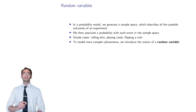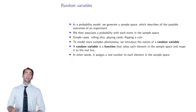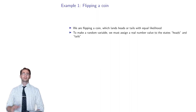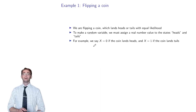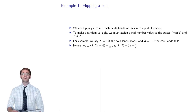To model more complex phenomena, we introduce a random variable — a function that takes each element in the sample space and maps it to the real line. If you're flipping a coin, you assign a number to each outcome: x equals zero for heads, one for tails. The probability that x equals zero is the probability of seeing heads, which is one half. X is then a random variable.